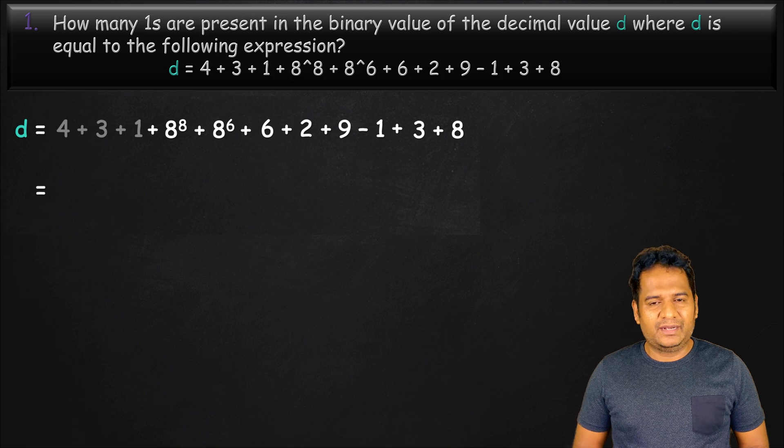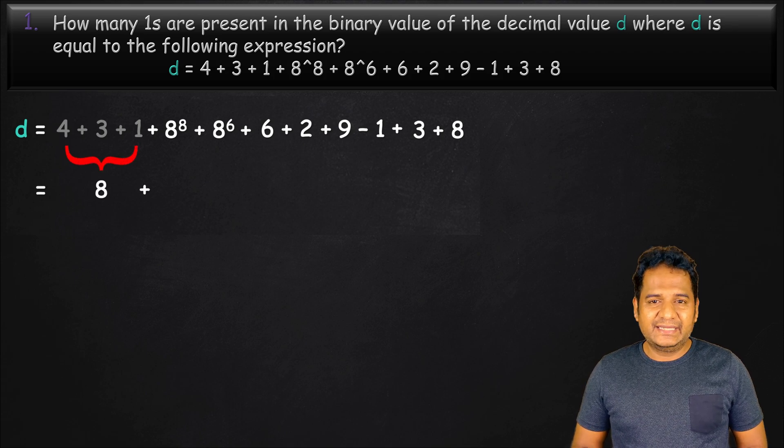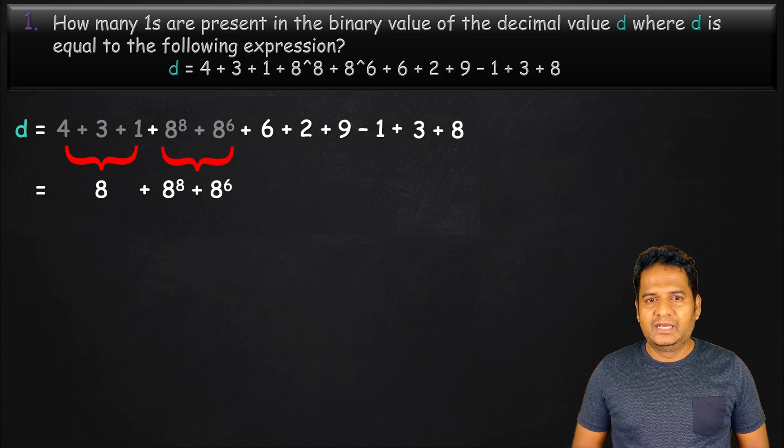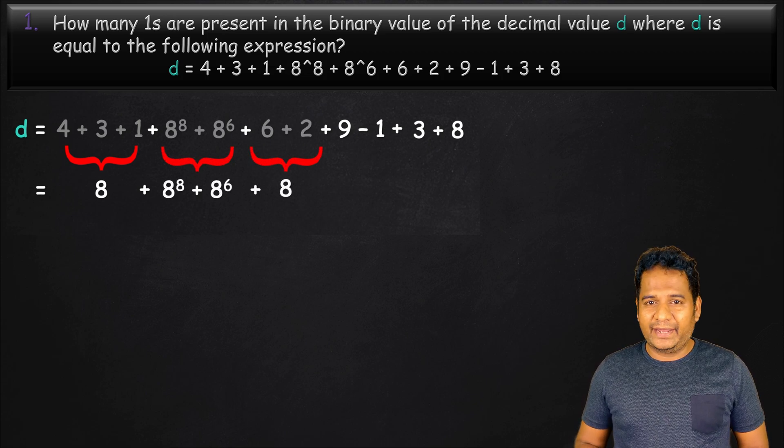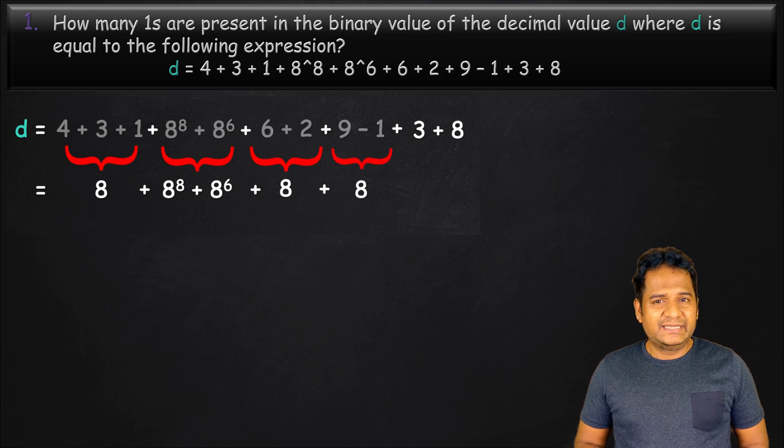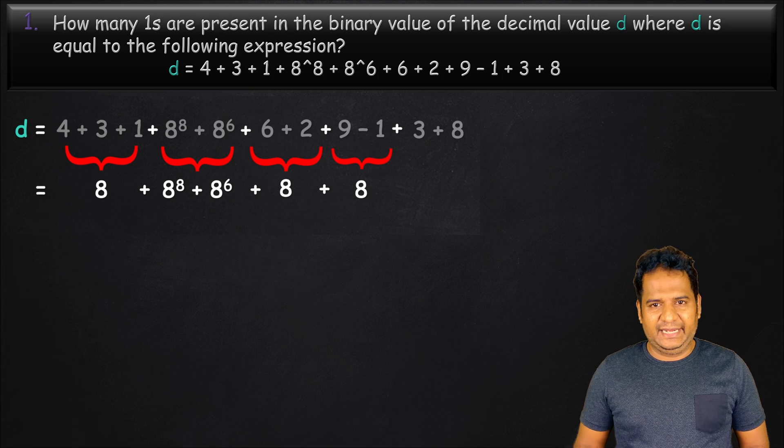4 plus 3 plus 1 gives 8. We can then write 8 power 8 and 8 power 6 as is. 6 plus 2 gives 8, while 9 minus 1 also gives 8. Then, we can just interchange the position of 3 and 8.